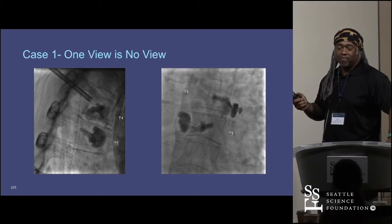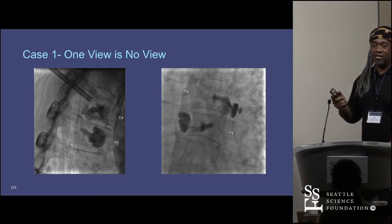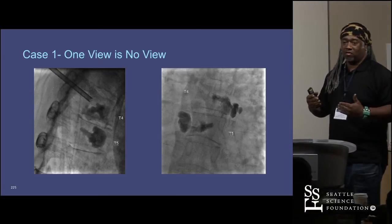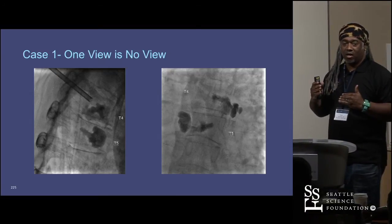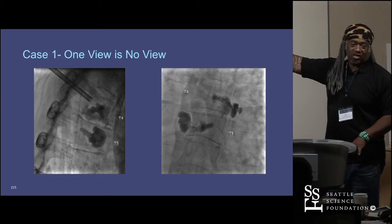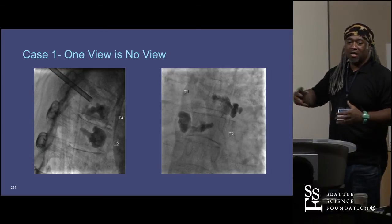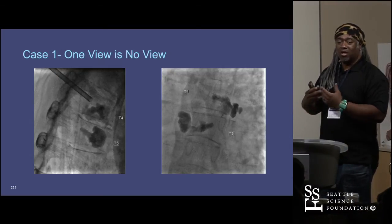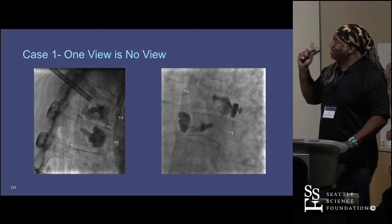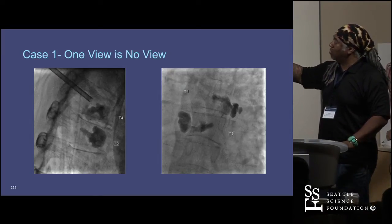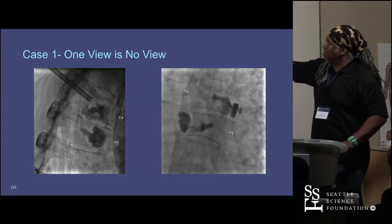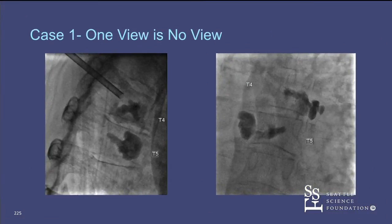If you're doing a balloon kyphoplasty, one of the first things you see as you start to fill a void is very smooth margins. When you get extravasation outside of the vertebral body, you've left the trabeculation, and you're going to get smooth margins. As I start to deploy — this is early on — I'm looking for these very smooth margins. If I'm seeing really smooth margins like this, I stop and go to my contralateral view.